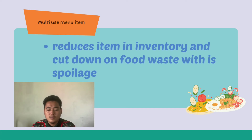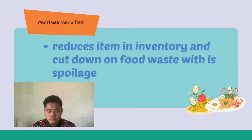Third, use multi-use menu items. This method not only saves money on buying raw materials, it also reduces items in the inventory and cuts down on food waste from spoilage. For example, the restaurant uses one ingredient — meat — that can be made into multiple dishes such as meat soup and meat dishes.